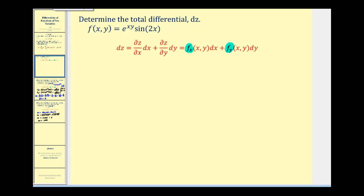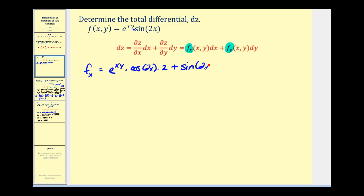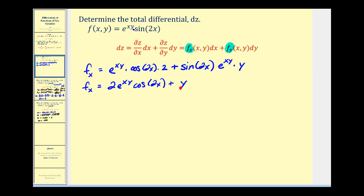The partial derivative of f with respect to x, treating y as a constant: notice both terms have x in them, so we apply the product rule. We have the first function times the derivative of sine two x — that's cosine two x times two — plus the second function, sine two x, times the derivative of e to the xy with respect to x, treating y as a constant, which gives e to the xy times y. Cleaning this up: two e to the xy cosine two x plus y e to the xy sine two x.